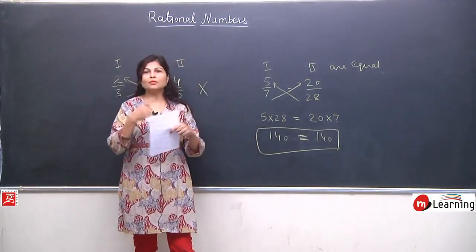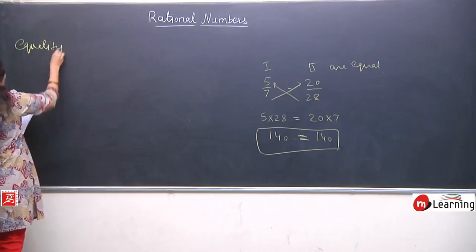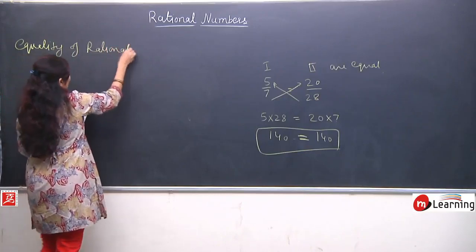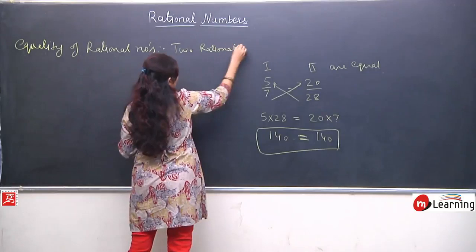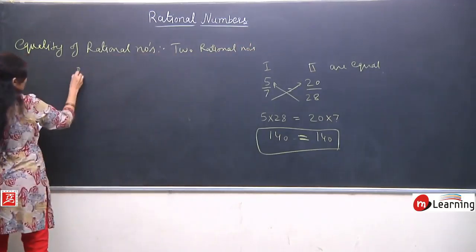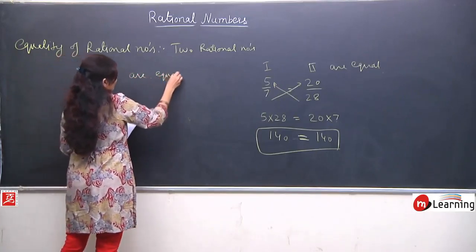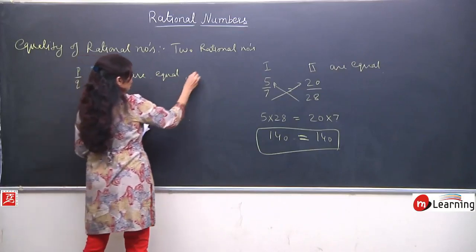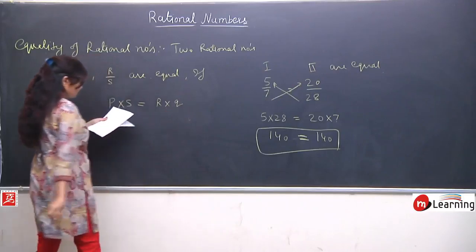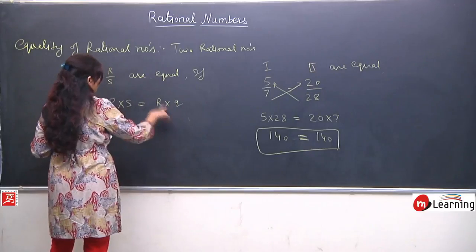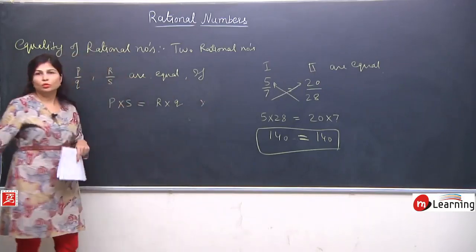For example, 5 upon 7 and 20 upon 28 — we cross multiply: 5 times 28 equals 20 times 7. Both give 140. Since 140 equals 140, these two rational numbers are equal. The definition of equality: two rational numbers p upon q and r upon s are equal if their cross multiplication is equal. If the cross multiplication is not equal, the numbers are not equal. This is a simple method to check equality.